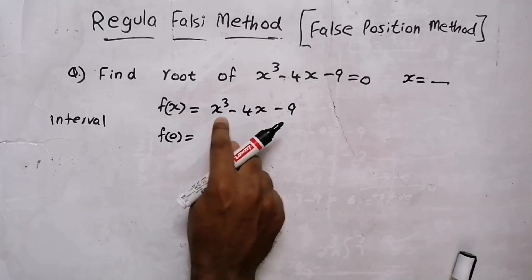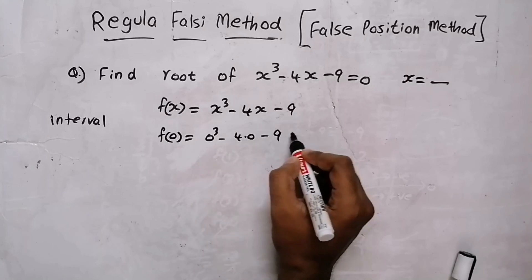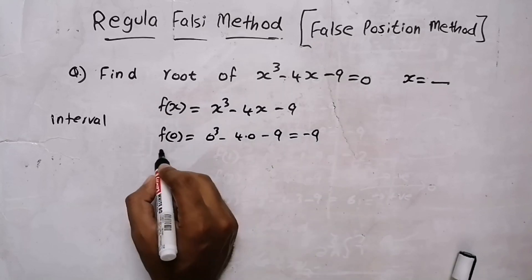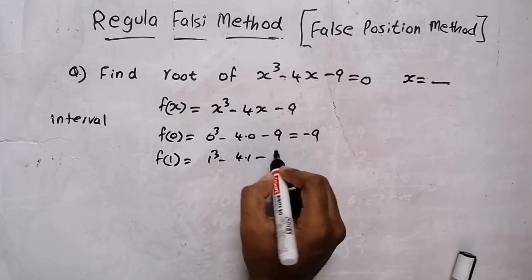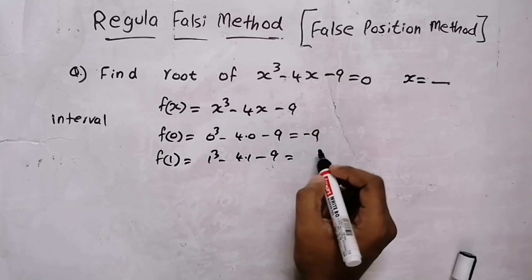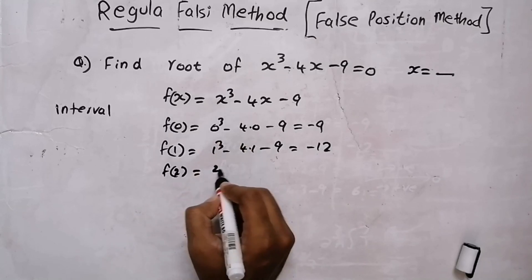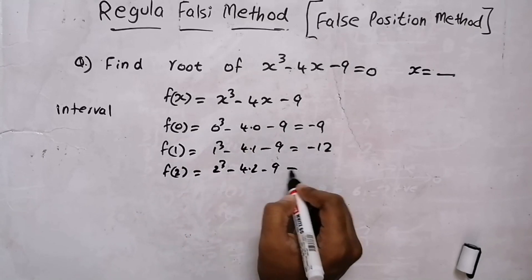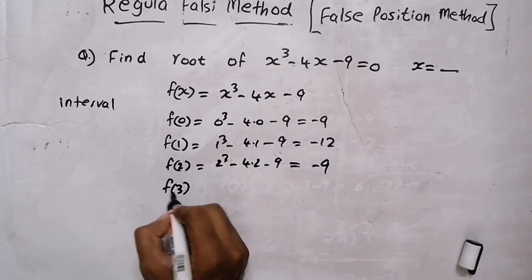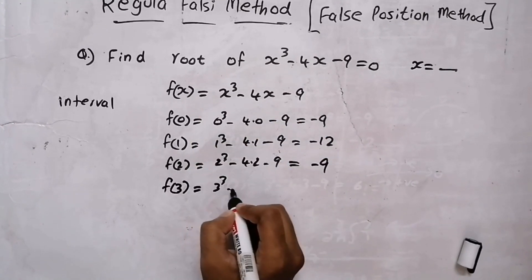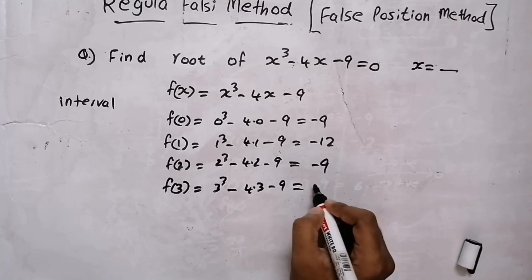f(0) = 0³ - 4(0) - 9 = -9. Then f(1) = 1³ - 4(1) - 9 = -12. Then f(2) = 2³ - 4(2) - 9 = -9. Then f(3) = 3³ - 4(3) - 9 = 6.